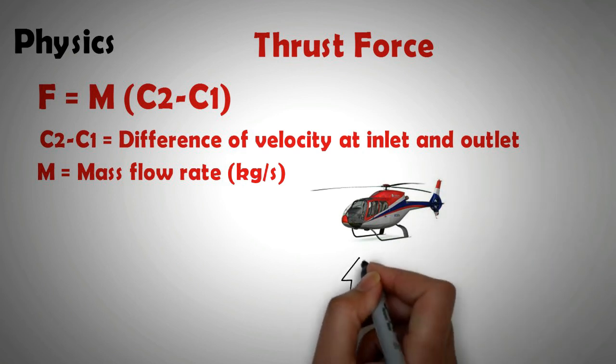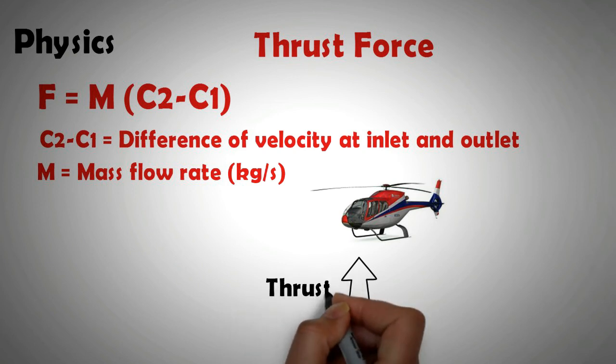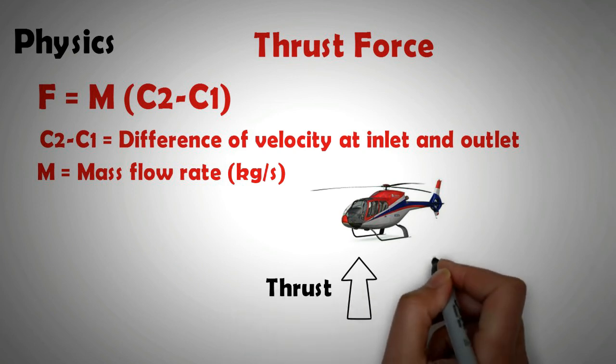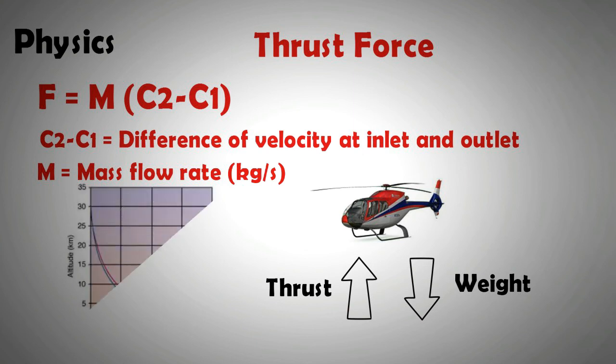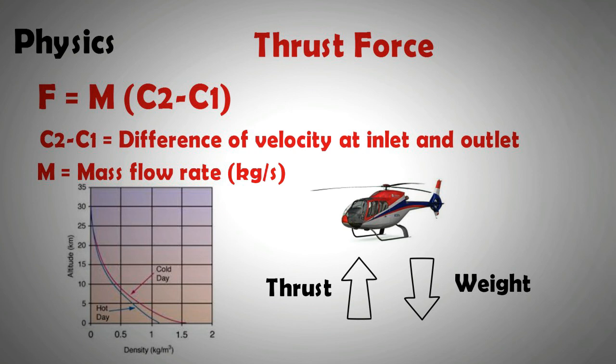The thrust force must be equal to the weight of the aircraft to maintain its altitude while hovering. The thrust force must be higher than the weight of the aircraft for climbing. Note that the force is directly proportional to the mass flow rate. The mass flow rate is directly proportional to the density of air. And the density of air also reduces with altitude. And therefore, as the aircraft climbs up, further thrust is lost. So to sum it up again, when the aircraft climbs, the thrust is lost because of the absence of ground effect and also because of the reduction in air density. More energy is required to fly at higher altitudes than flying close to the ground.